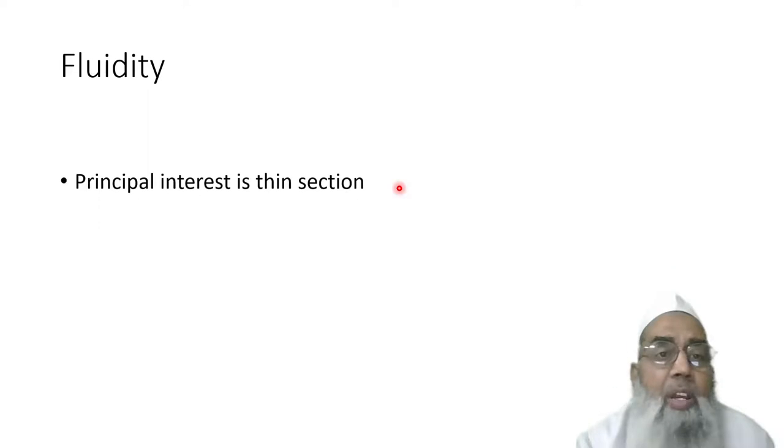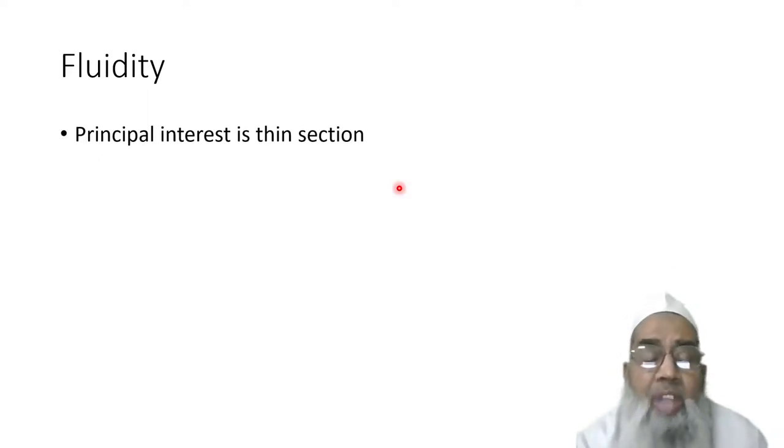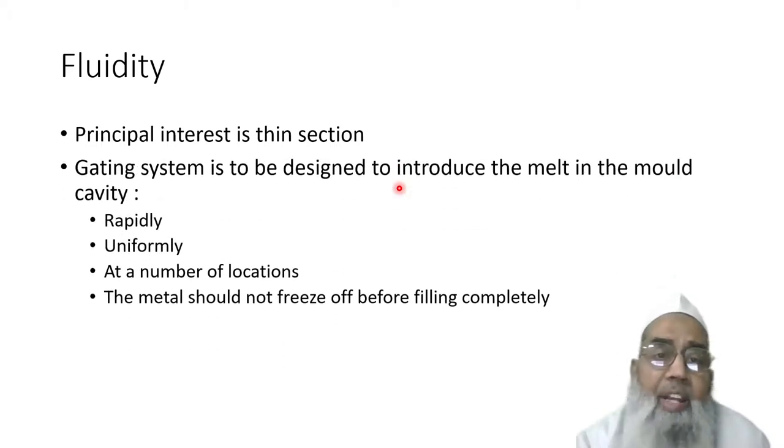Fluidity is of principal interest in thin sections. When molten metal is poured into the cavity, it starts solidification, and thin sections may not be able to get filled. The gating is to be designed to induce the melt in the mold cavity rapidly, uniformly, and at a number of locations so that each and every corner of the mold may get filled.